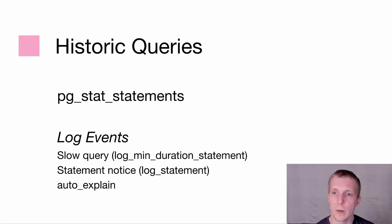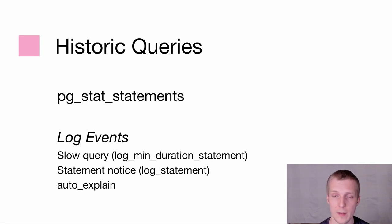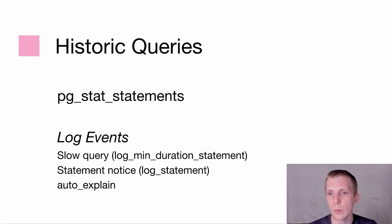Let's talk about historic queries, which brings me to one of my favorite essentials: pg_stat_statements. It's been with Postgres for a while and really changed the scenery in terms of what data you can get. I usually use this in conjunction with slow query log notices, statement notices, and auto_explain — while it stands on its own, you really do need to combine it with other things.